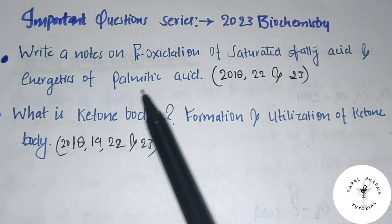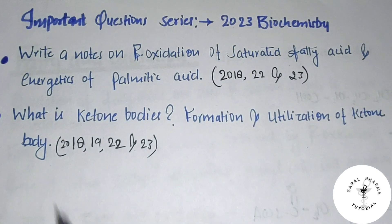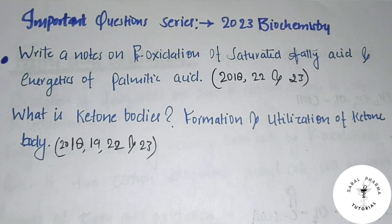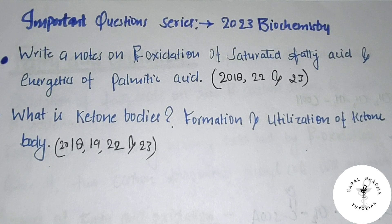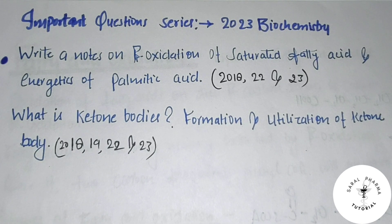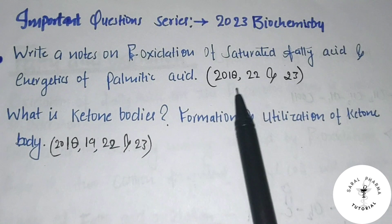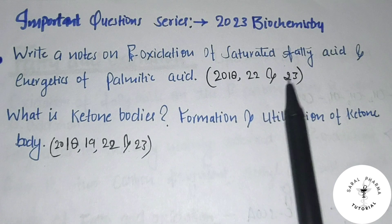And the energetics of palmitic acid. Saturated fatty acid is a solid carbon chain — that's why it's called a saturated fatty acid. Notes on beta-oxidation. This question has appeared in 2018, 2022, and 2020.